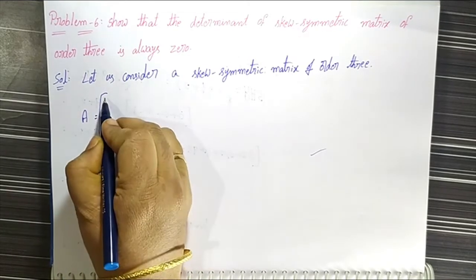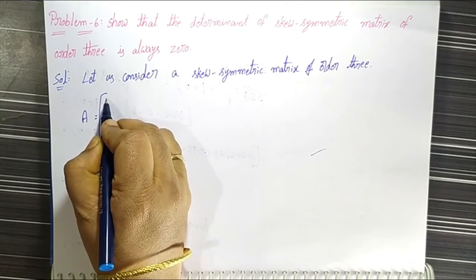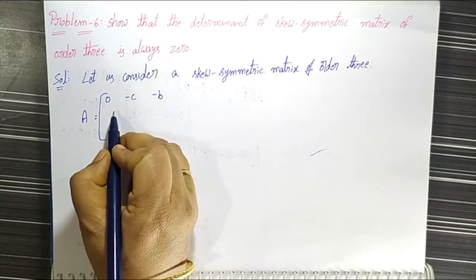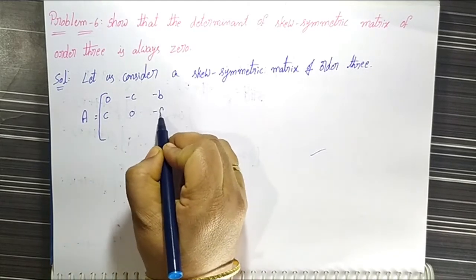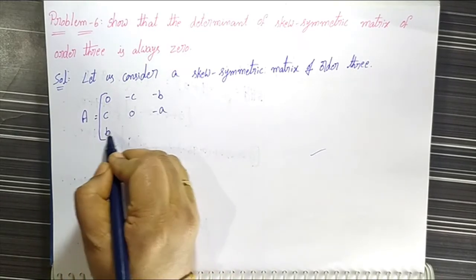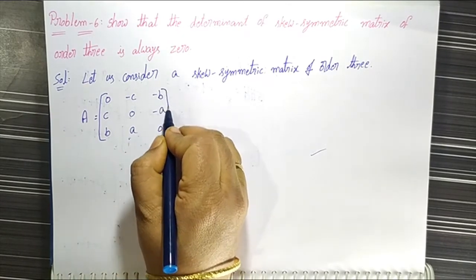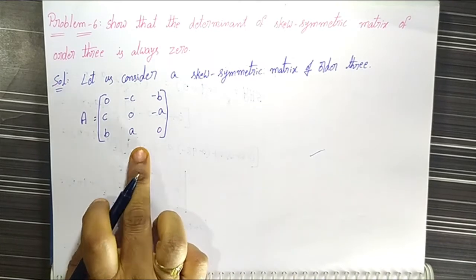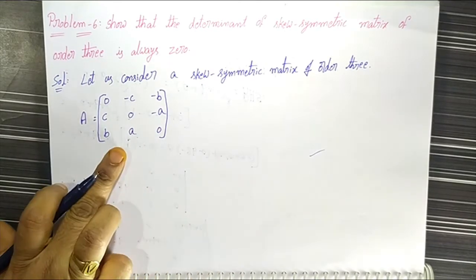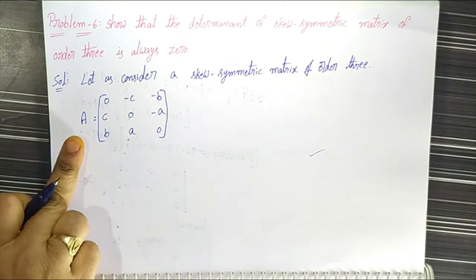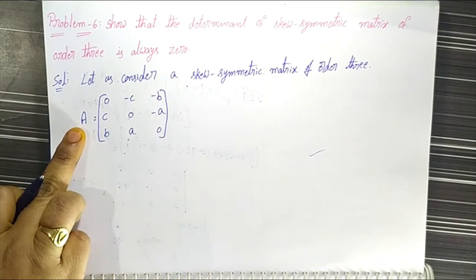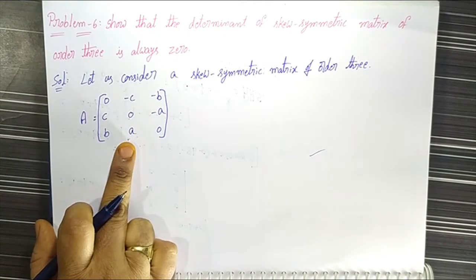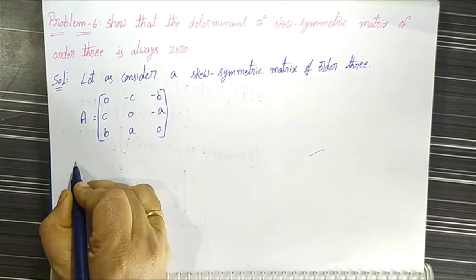The matrix A is equal to the skew symmetric matrix in the form: 0, -c, -b; c, 0, -a; b, a, 0. This is one skew symmetric matrix we assume. Then we have to show this matrix A's determinant equals zero.